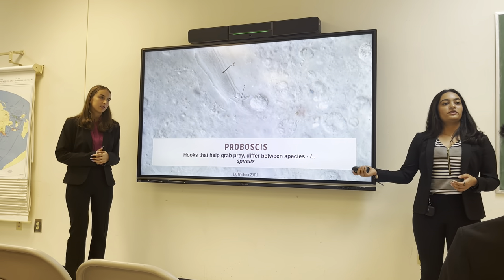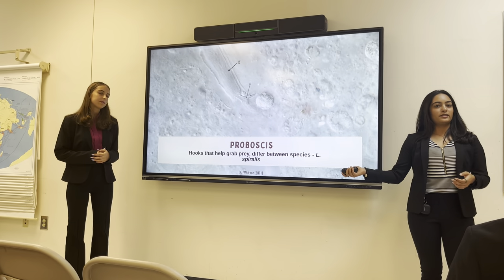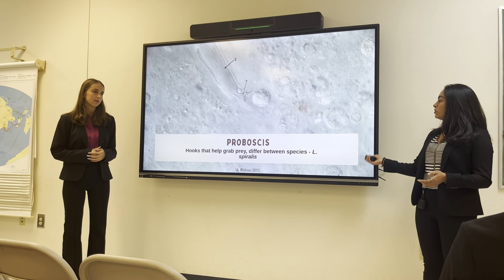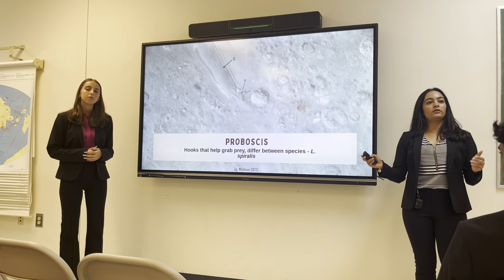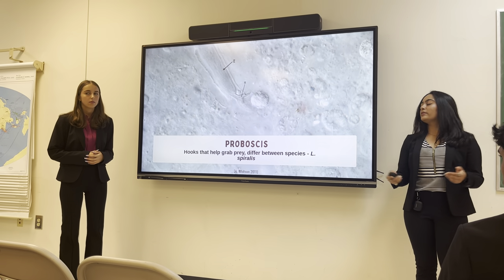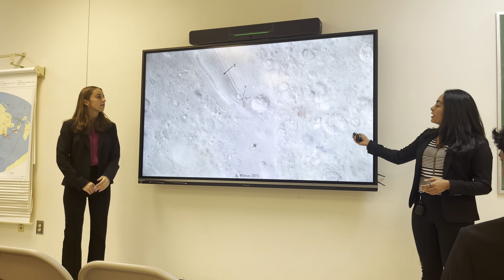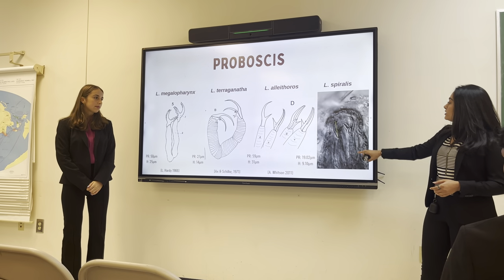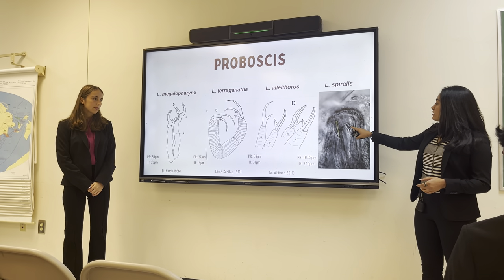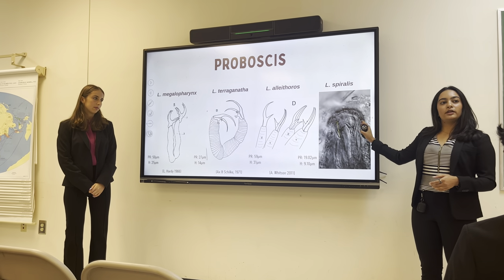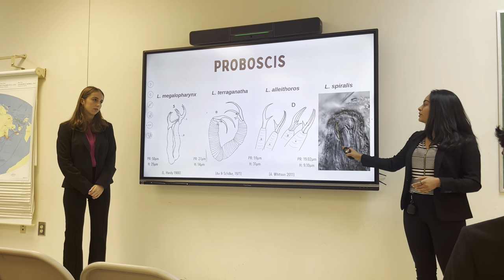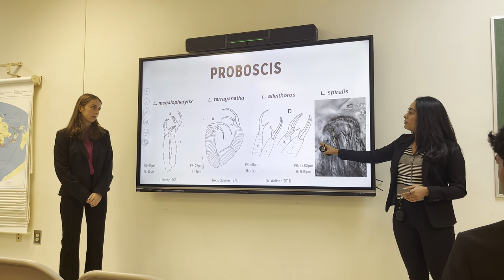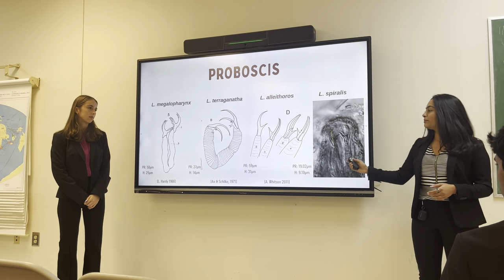The first structure we use to compare and contrast these species is the proboscis. The proboscis is normally used as hooks that will grab prey, and comparing and contrasting the different species, you can see that with ours they have a longer primary hook and a shorter secondary hook, whereas with the others it can be an extremely long primary hook or even the same size of both.